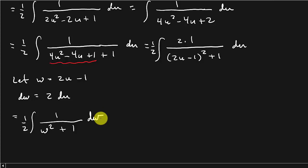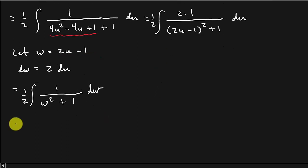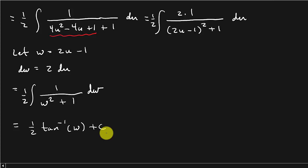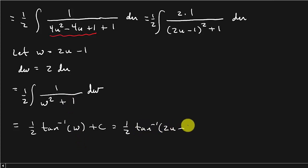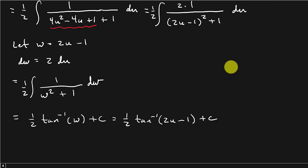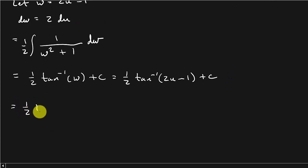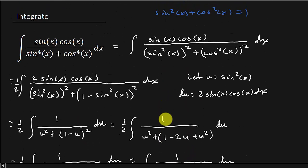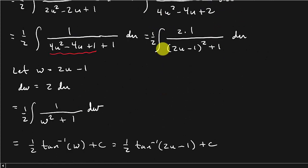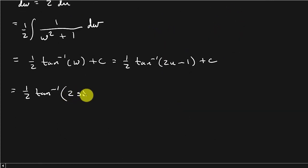That integral is the inverse tangent of w plus C. Now we back-substitute to get everything in terms of x. Replacing w with 2u minus 1, and then u with sine squared x, the final answer is one half times inverse tangent of 2 sine squared x minus 1, plus C.